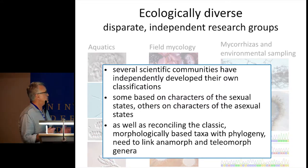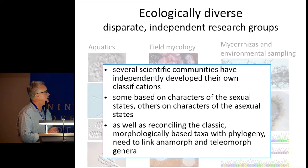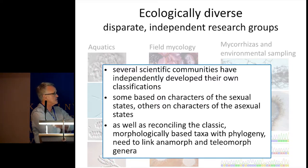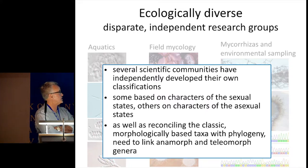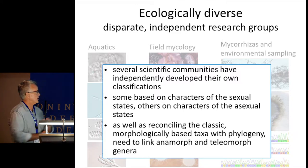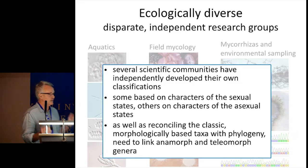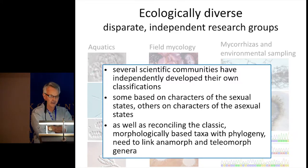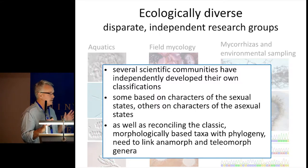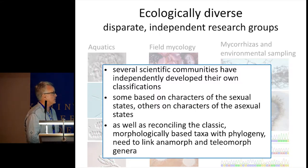With this ecological diversity, you have a number of disparate, more or less independent research groups that have been working on this group of fungi. These different scientific communities have different needs, so they've independently developed their own classifications — some based on characters of sexual states, some based on characters of asexual states. As well as reconciling the classic morphologically-based taxa with phylogeny, there's a need to link the anamorph and teleomorph genera as used by these different scientific communities.